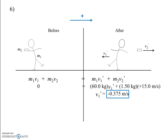Notice that I wrote v1-prime as the unknown without assuming a sign. Some students are tempted to write negative v1-prime since they know the teacher goes left — please don't do that. Just call it v1-prime and let the algebra take care of itself. You'll end up with a negative sign in the answer, which agrees with left since we called right positive. The book moves at 15 m/s while the teacher moves at only 0.375 m/s due to the large difference in mass, but their momenta cancel back to zero.